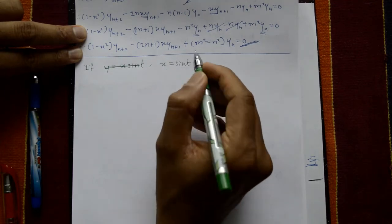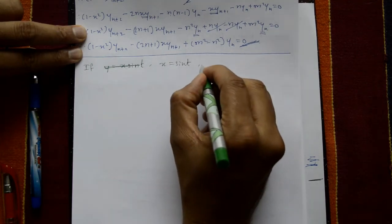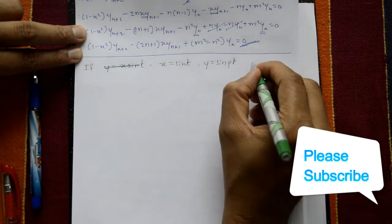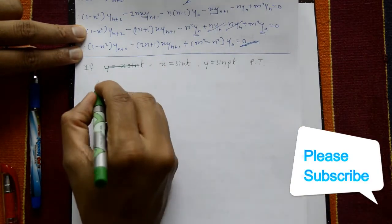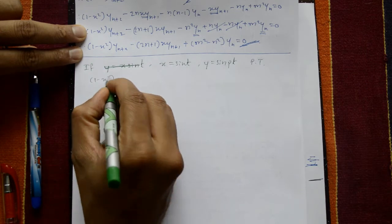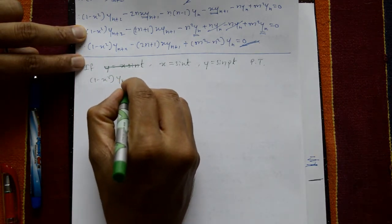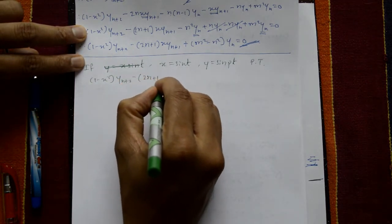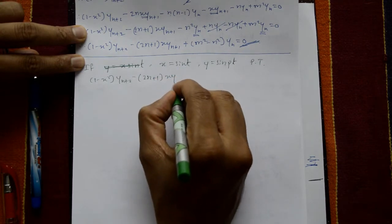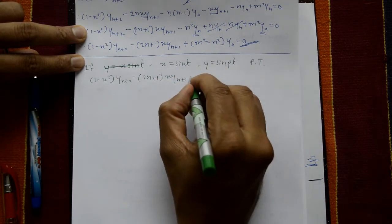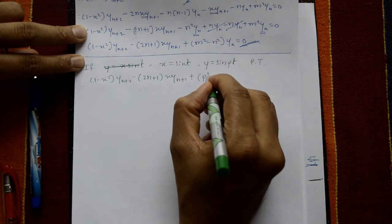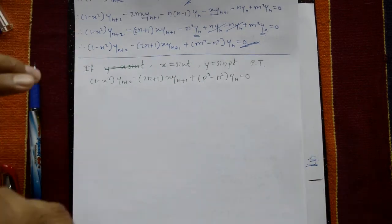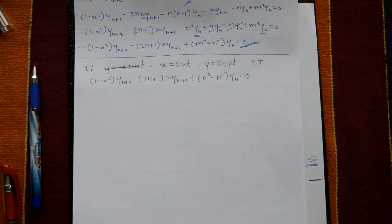Given x = sin t and y = sin(pt), prove that (1 - x²) yₙ₊₂ - 2(n+1) x yₙ₊₁ + (p² - n²) yₙ = 0.